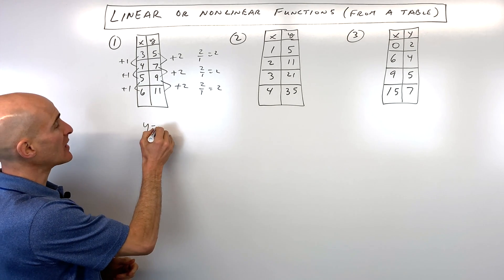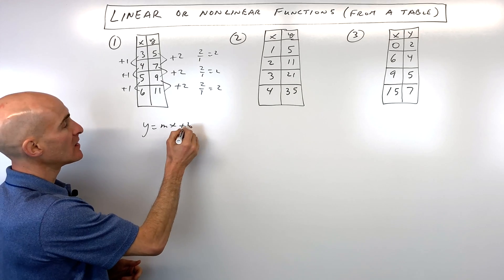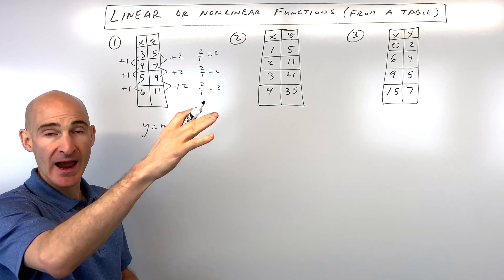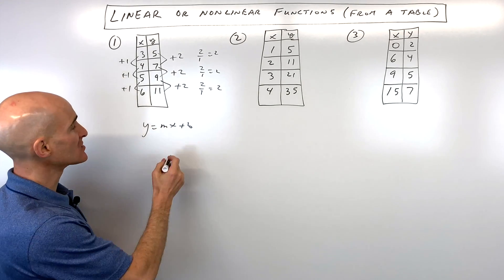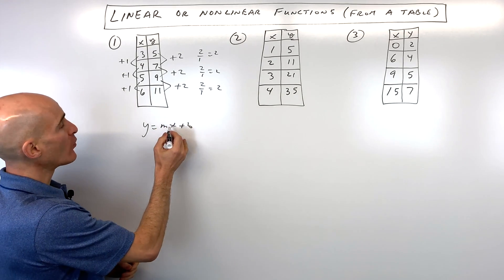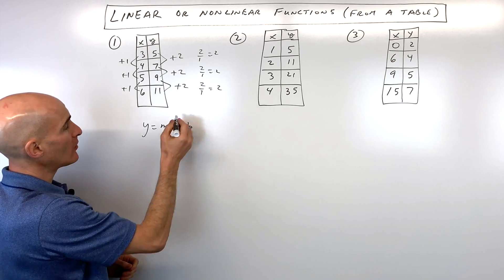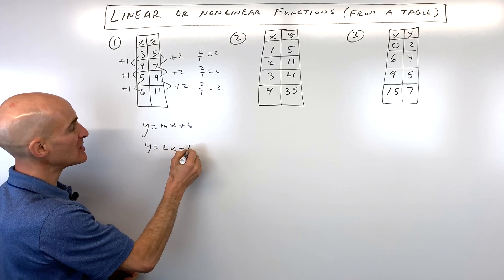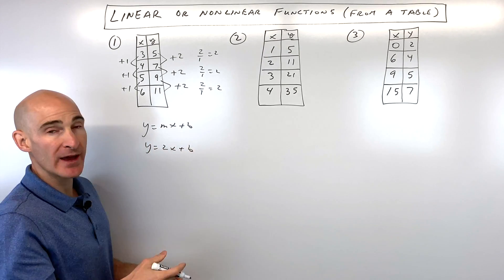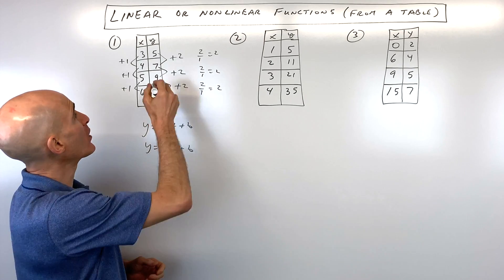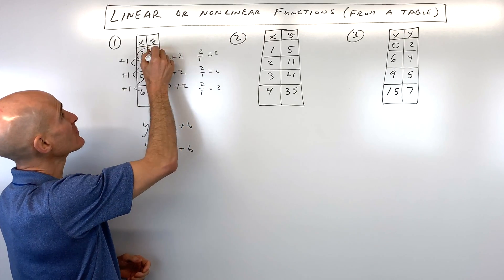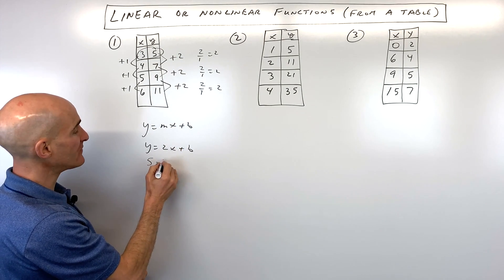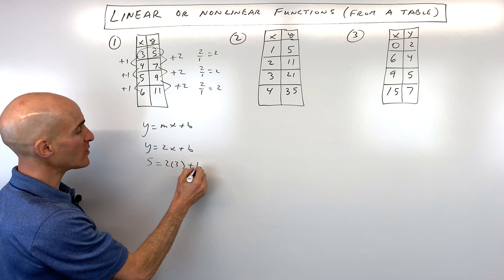So if we want to write the equation, we say y equals mx plus b — that's the equation of a line, a linear function with a constant slope. We know the slope is two, so we have y equals two x plus b. We don't know the y-intercept, the b value, yet.